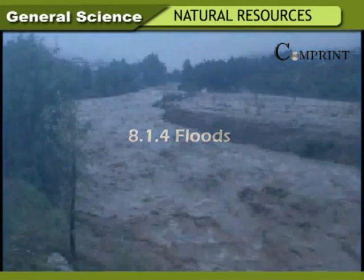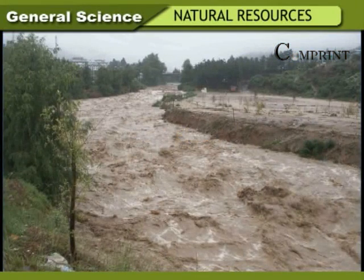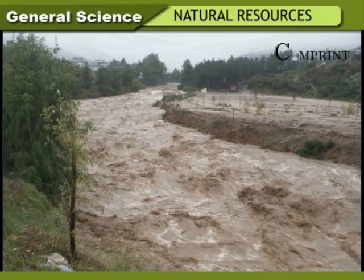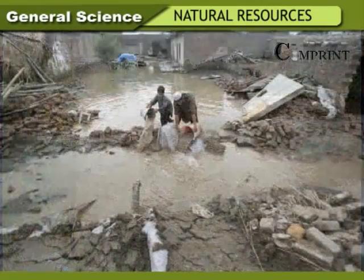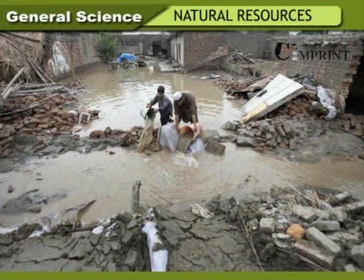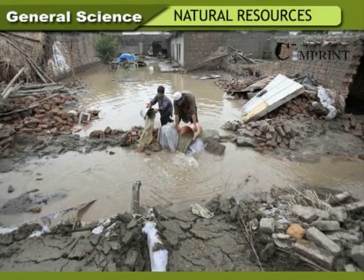Floods occur due to heavy rainfall. The overflow of rivers, streams, canals, and drainage canals is due to floods. Due to floods, fields are submerged, crops are damaged causing loss, houses collapse, huts are washed away, and along with household articles there is fear of animals and human beings also being washed away. Normal life gets disrupted.